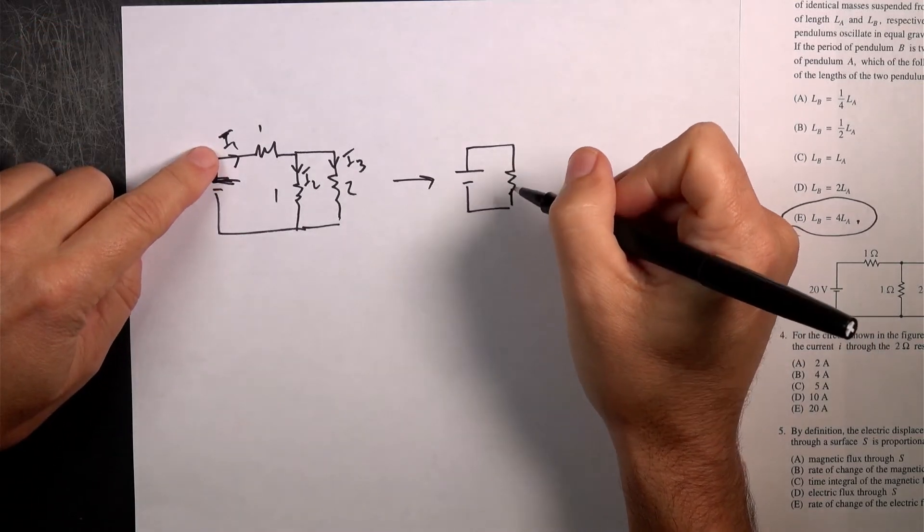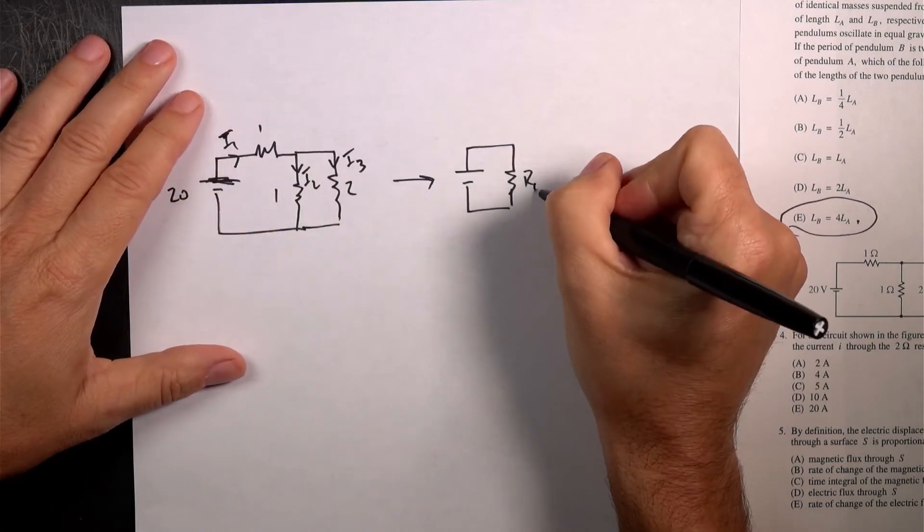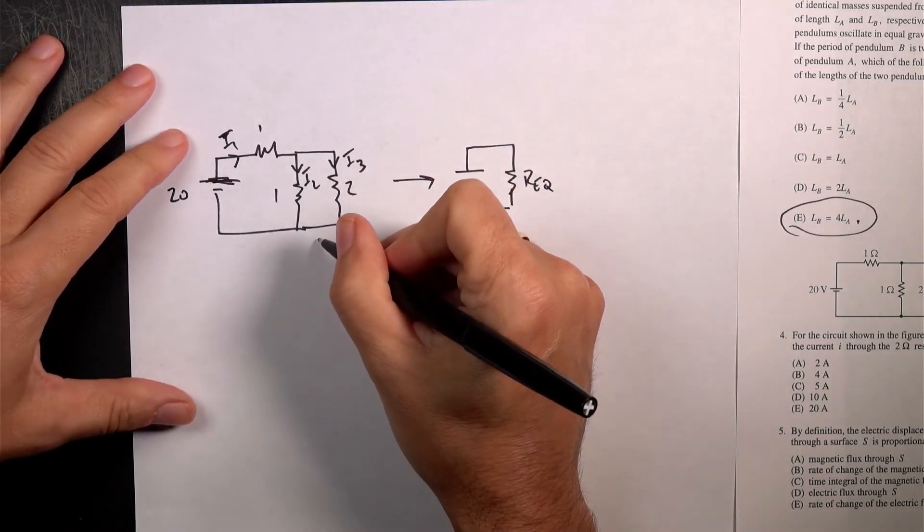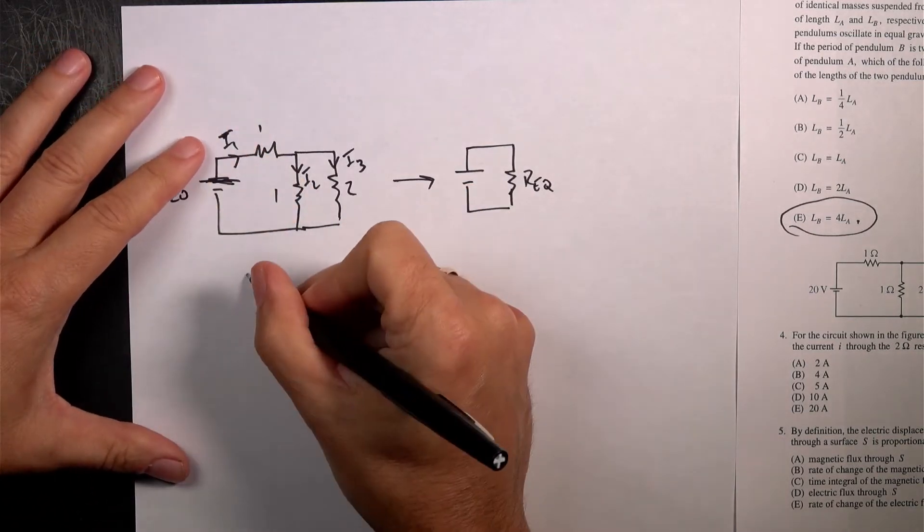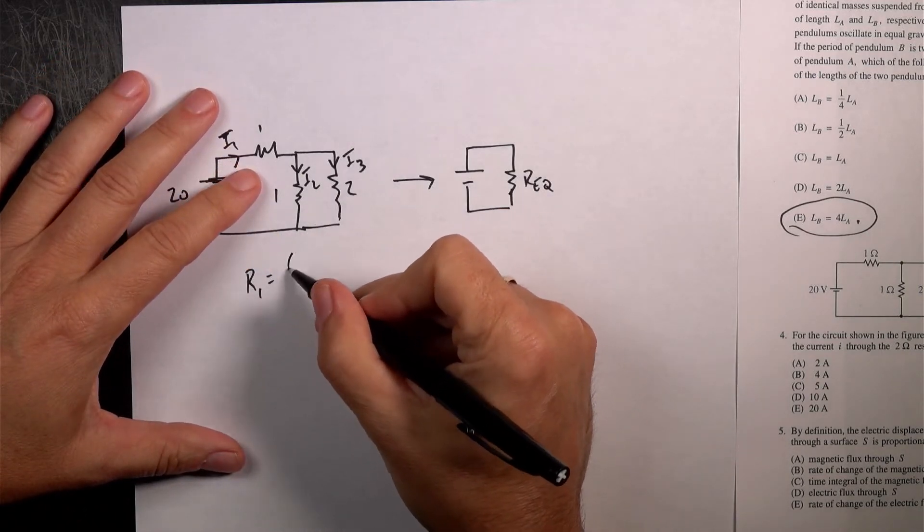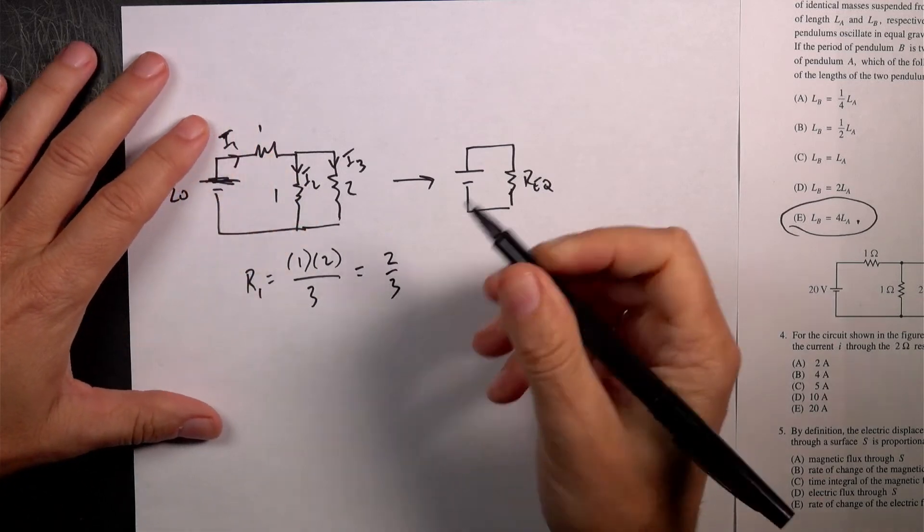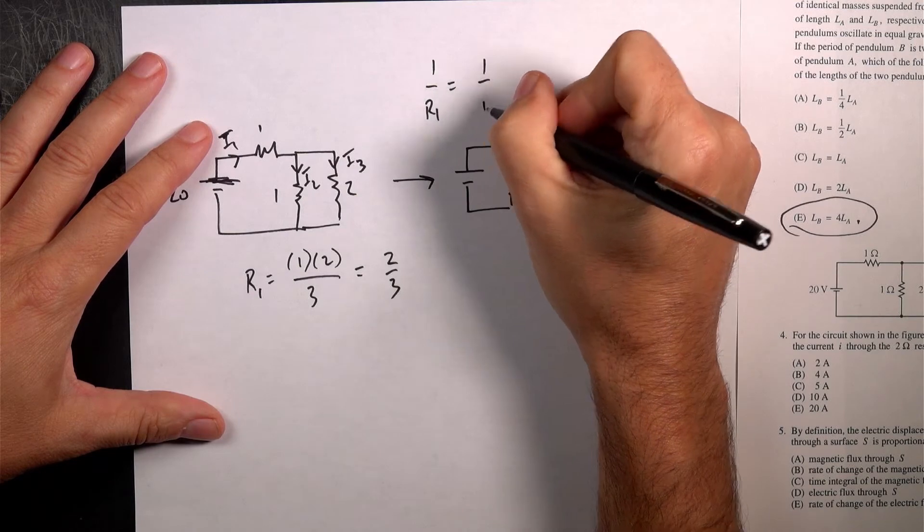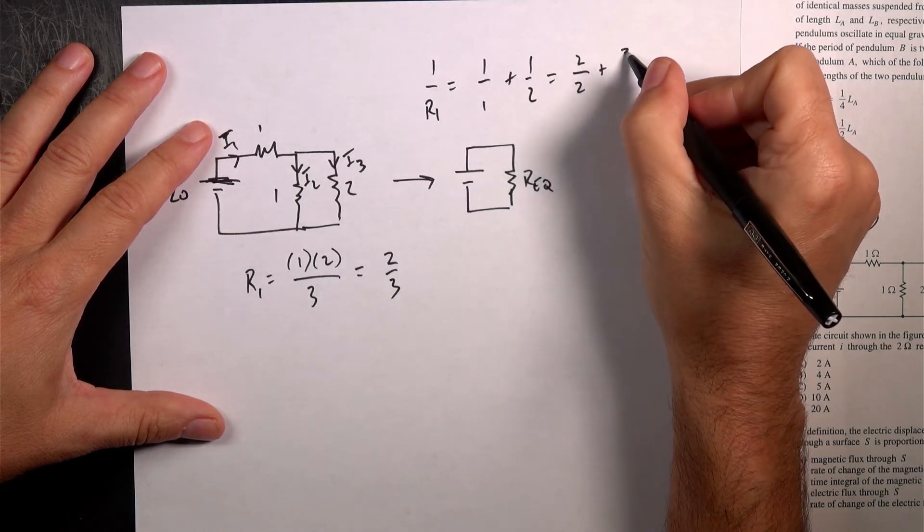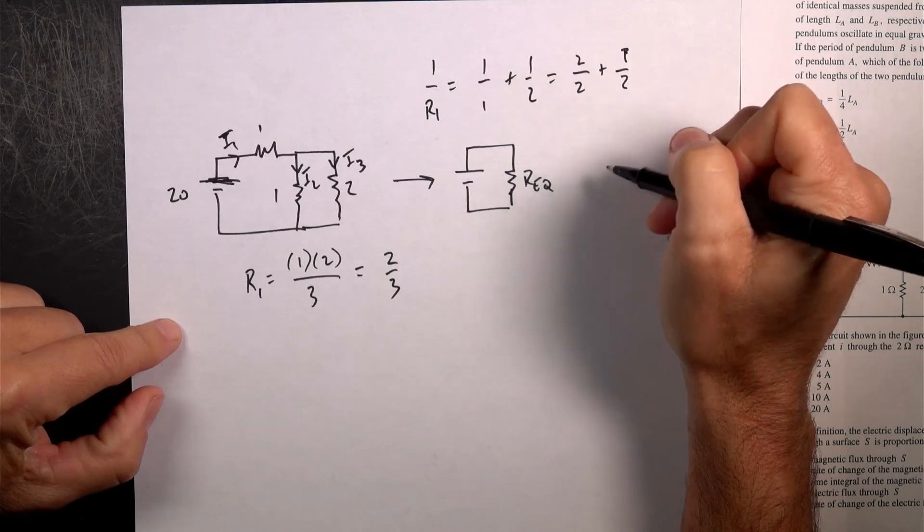And that will give me I1. And then from that, I can use the current divider equation. So I need to find this R equivalent resistance. So right here I have three resistors. These two are in parallel. So I'm going to call that R1. If they're in parallel, then I multiply the two together, 1 times 2 divided by them added together. 1 plus 2 is 3. So I get 2 thirds, a 2 third ohm resistor. That comes from 1 over R1 equals 1 over 1 plus 1 over 2. If you get a common denominator, it's 2 over 2 plus 1 over 2, and that's 3 over 2. And that's 1 over R1. You flip it and you get 2 thirds.